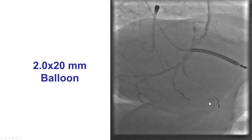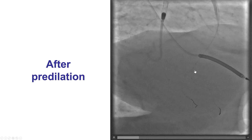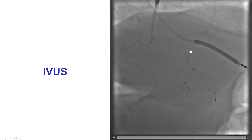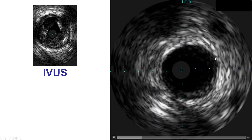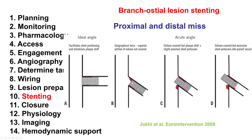We then predilated with a 2.0 by 20 mm balloon, which improved the stenosis. We now had a branch ostial lesion to treat, and one of the challenges is how to avoid too much stent protruding into the main vessel. IVUS showed the vessel was actually 3.5 mm — a fairly large posterior descending artery. What we want to avoid is going completely into the vessel and missing part of the ostium, which can lead to ostial restenosis. We want the stent coming partially into the main vessel to completely cover the ostium, minimizing the risk of restenosis. The distal RCA was fairly large, so this should not be a problem.